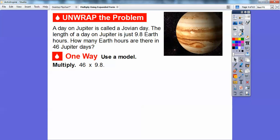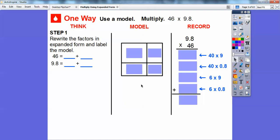So we're going to use a model with some rectangles here. Here's our model right here with some rectangles, and we're going to use the expanded form. 46 is equal to 40 plus 6, so here it is, 40 and 6 right here. And then 9.8 is equal to 9 plus 0.8. So up here I'll go 9 plus 0.8 right there.